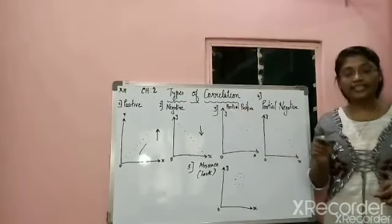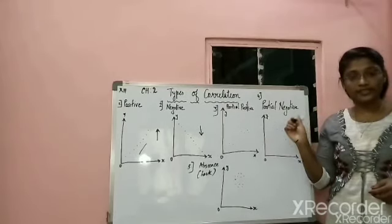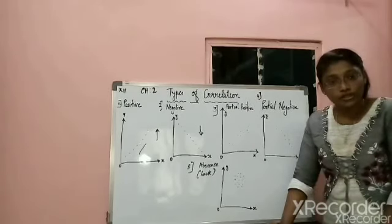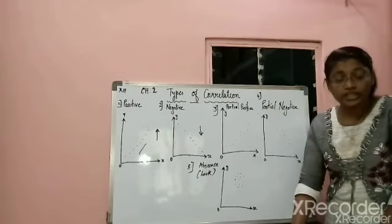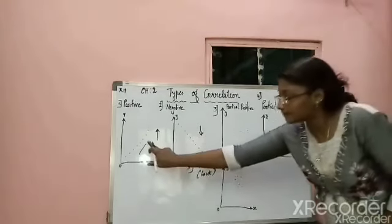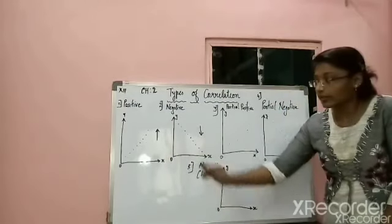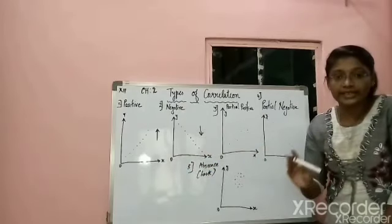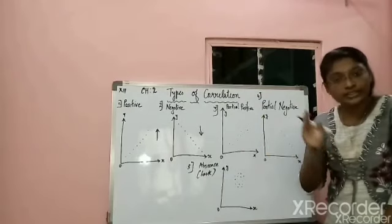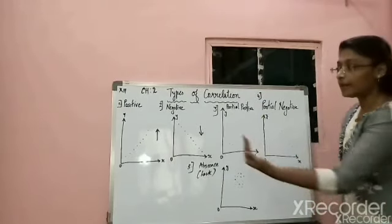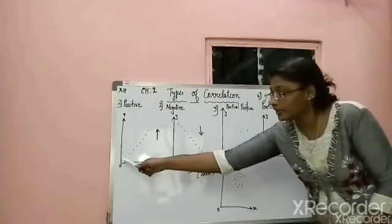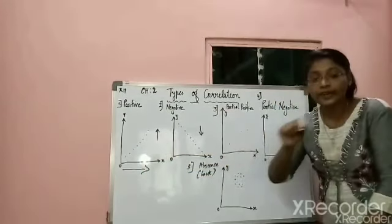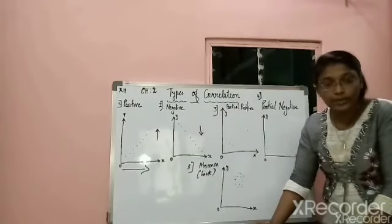Types of correlation in the scatter diagram method: positive, negative, partial positive, partial negative, and absence or lack of correlation. In positive correlation, you can see there is an upward direction. Whenever your graph shows an upward direction from left to right, you have to understand it is showing a positive correlation between the two variables.